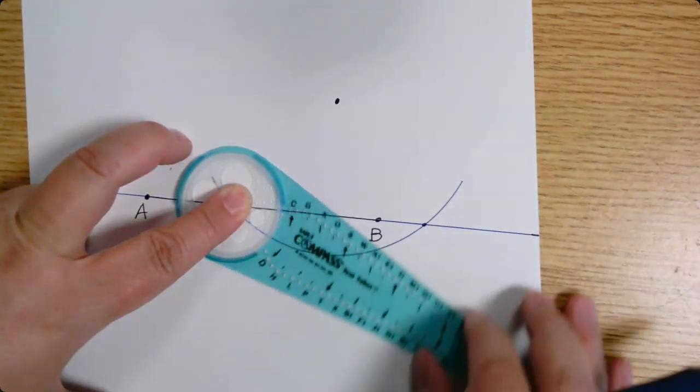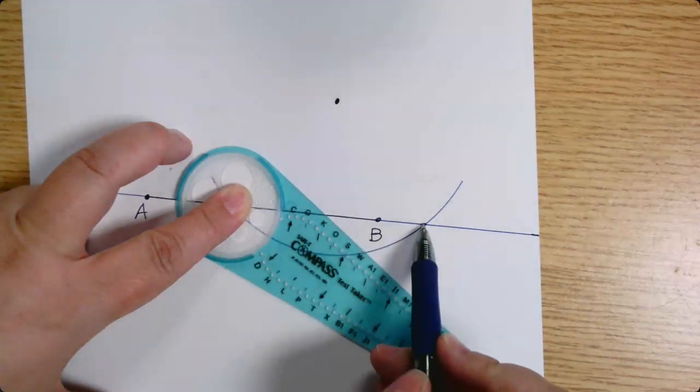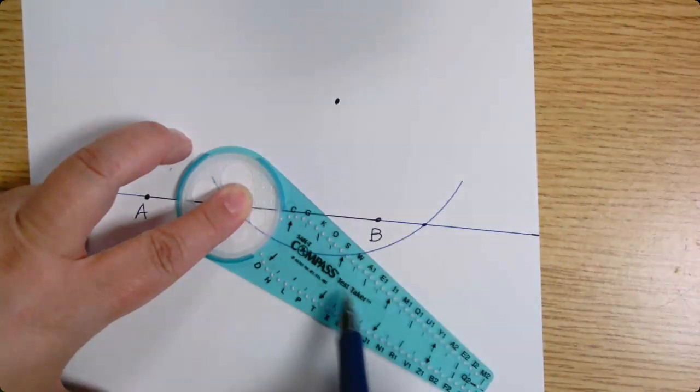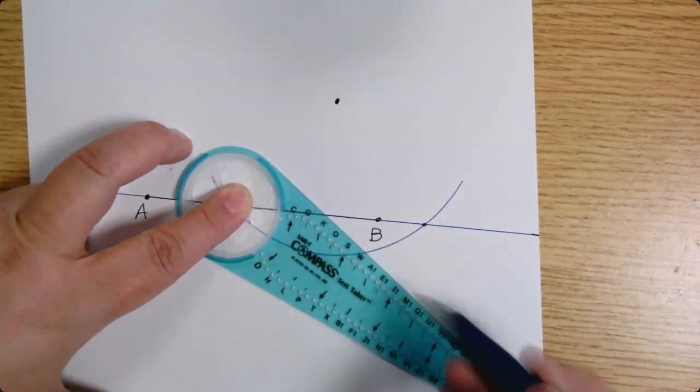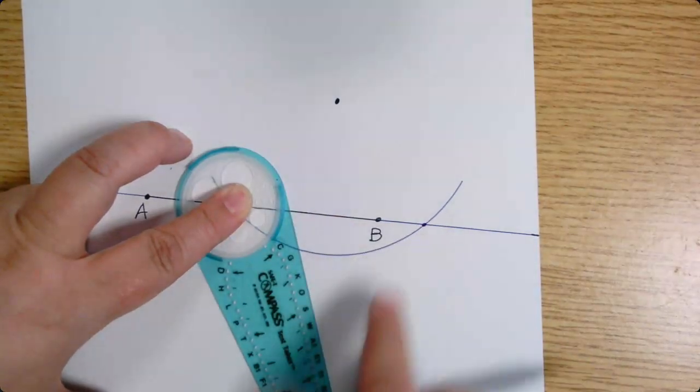And all I need to know about the size is it needs to be big enough that when I draw this arc and then I move my metal brad over here, the center that my finger's on over here, and draw the other arc, they have to cross. So I want to make sure I pick an arc that's more than halfway to this point.